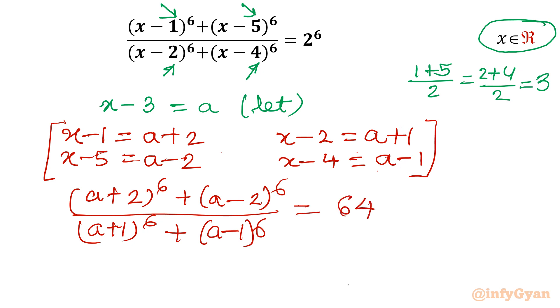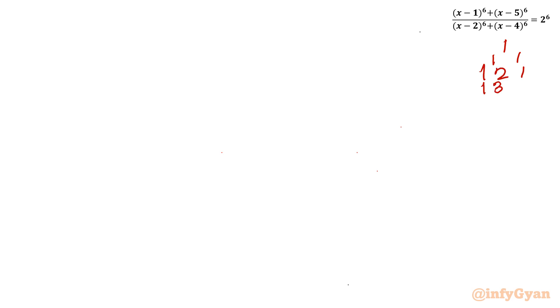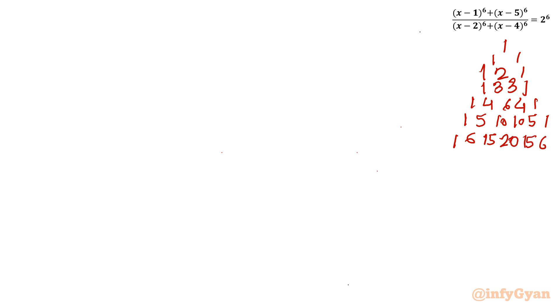Since the power is 6, we will use Pascal's triangle for coefficient calculation and binomial expansion. The Pascal's triangle row for power 6 gives coefficients: 1, 6, 15, 20, 15, 6, 1. These coefficients will be used during the expansion.